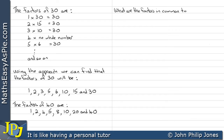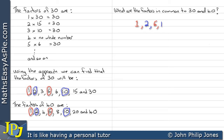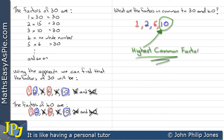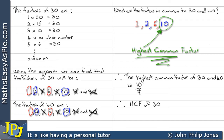What are the factors in common to 30 and 40? Let's have a look. They've both got 1, they both have 2, they both have 5, they have 10, and they don't have anything else in common. So we can see 10 is the highest common factor. Therefore, the highest common factor of 30 and 40 is 10.